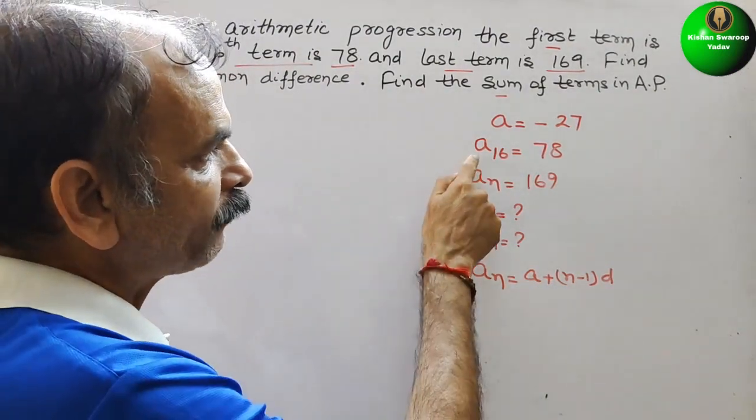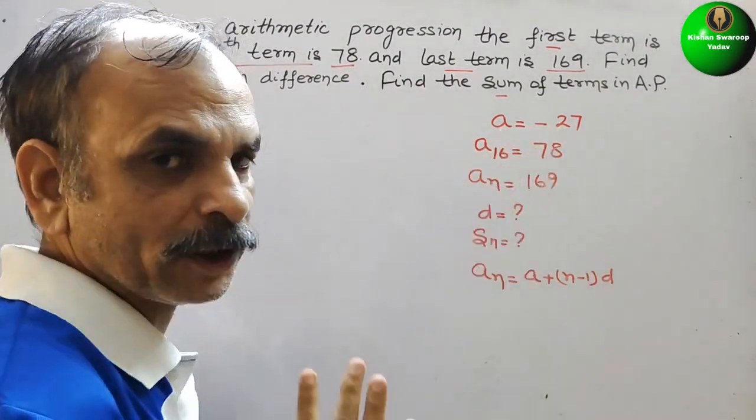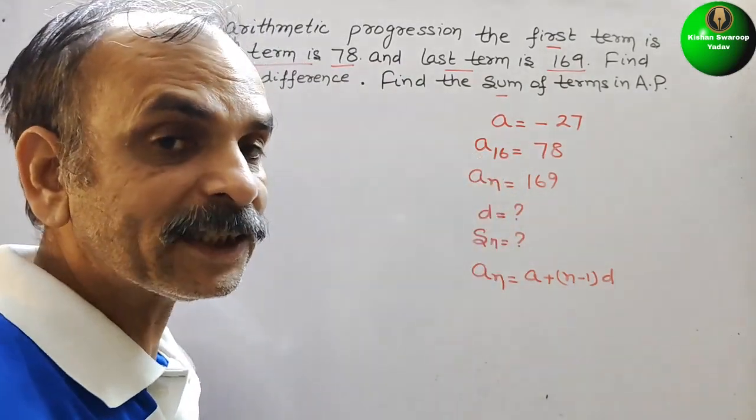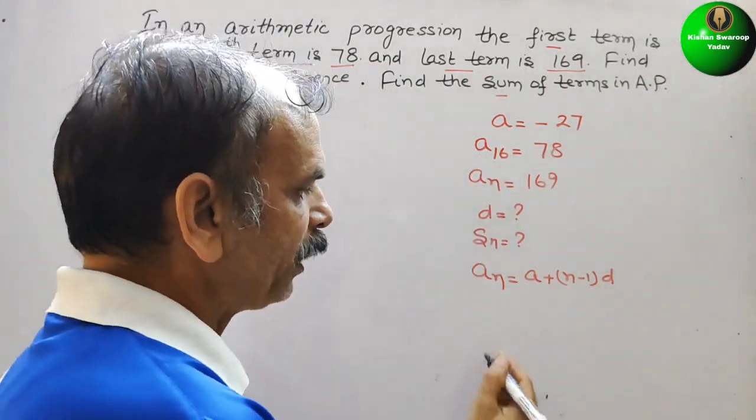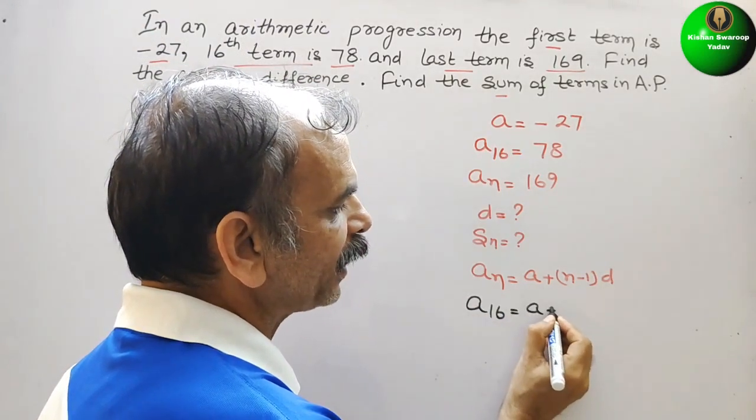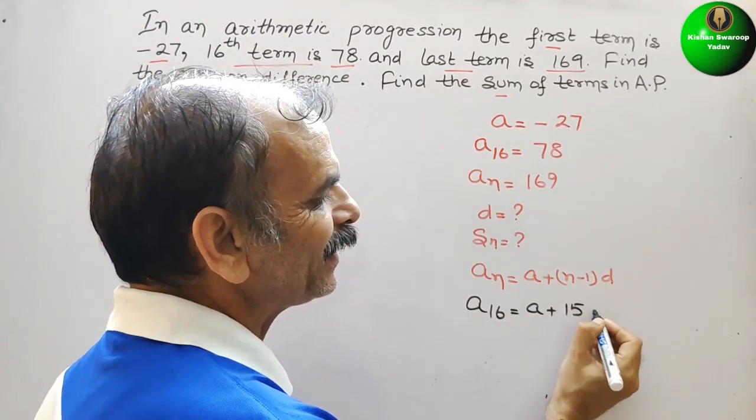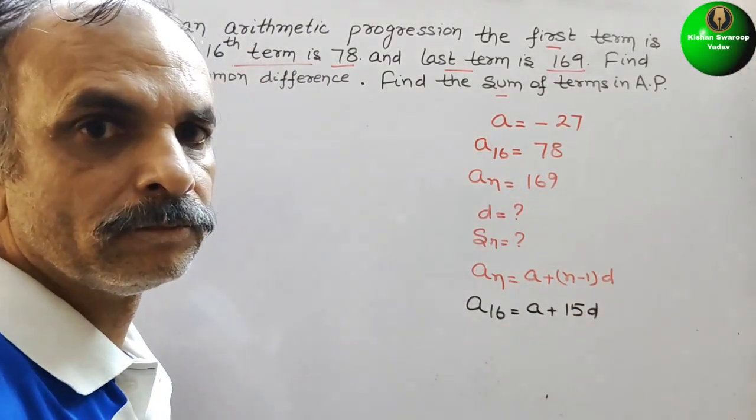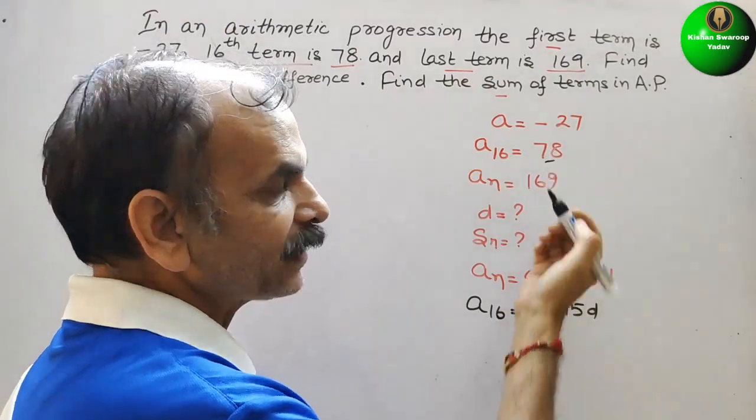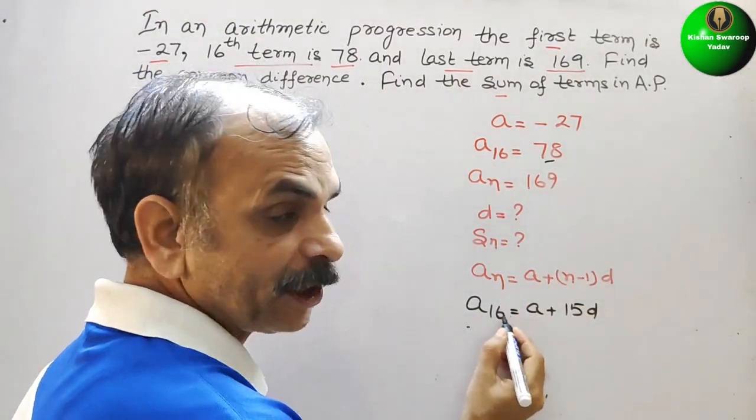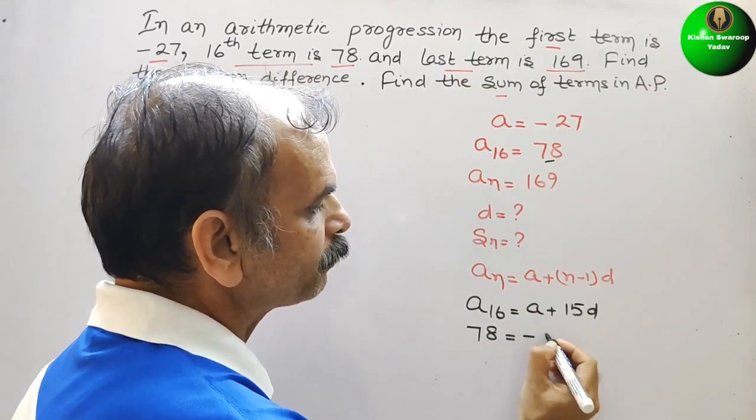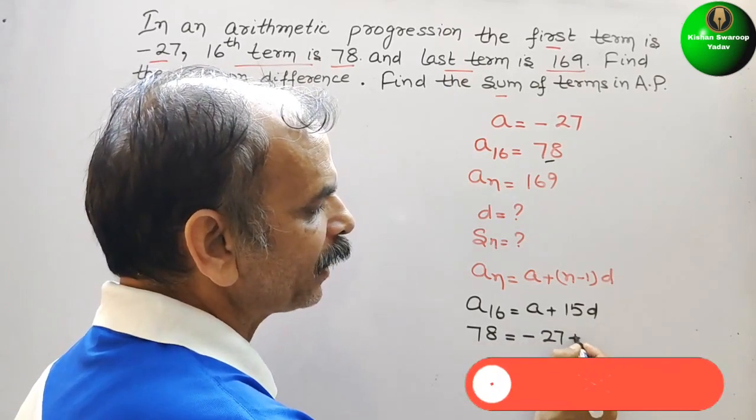Therefore, they have given here A is minus 27, and here they have given A₁₆, so A₁₆ is what? Simply we can write A₁₆ equals A plus 15D. Now substitute the value. A₁₆ is 78, equals A is minus 27 plus 15D.